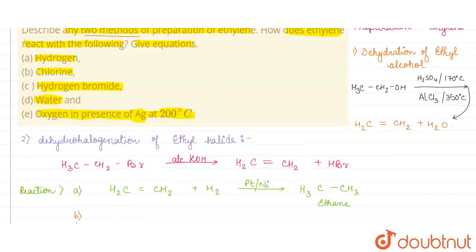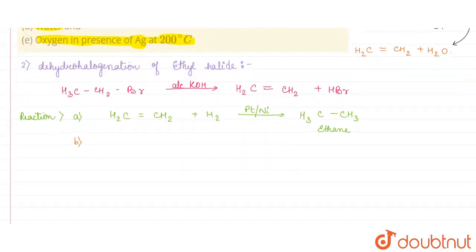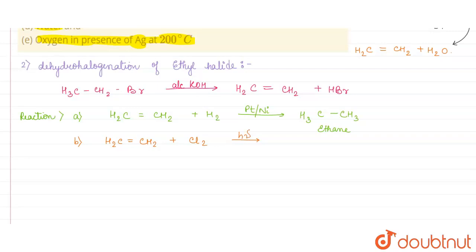Next, part (b) is the reaction with chlorine: H₂C=CH₂ plus Cl₂, in the presence of sunlight, gives CH₂Cl–CH₂Cl — that is, chlorine atoms are attached to both carbons. This is the addition product formed.